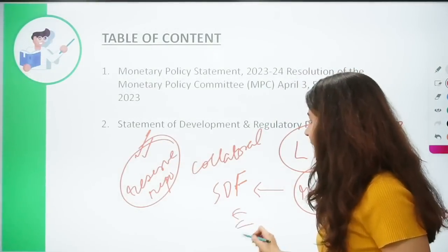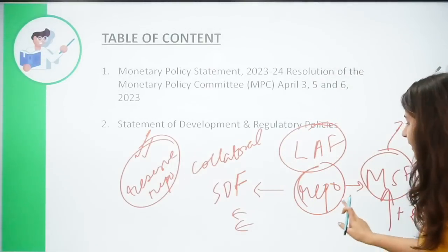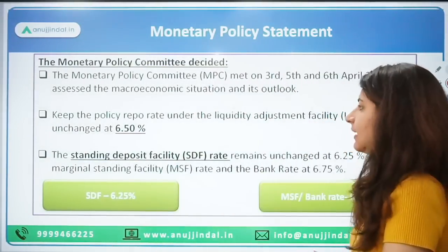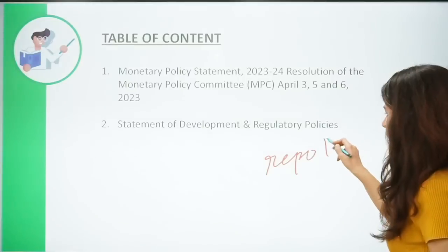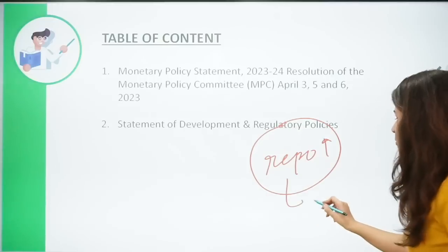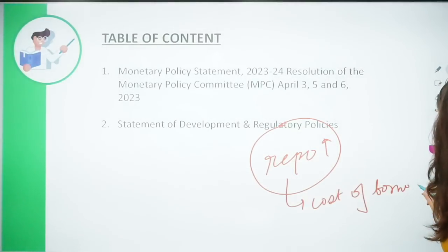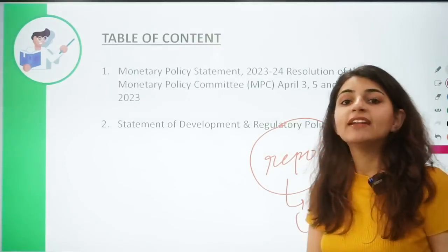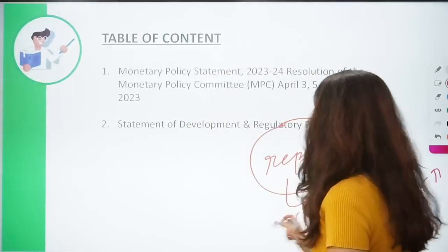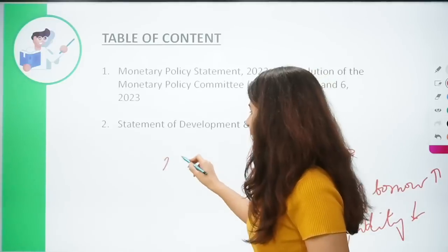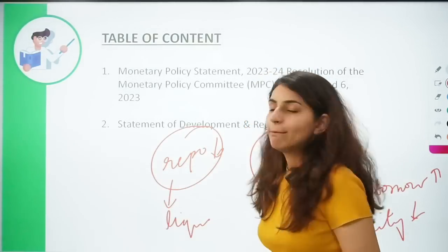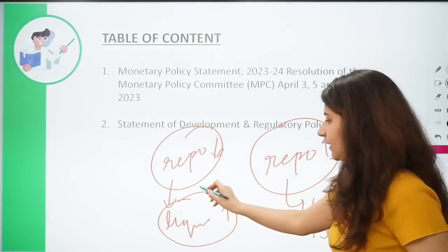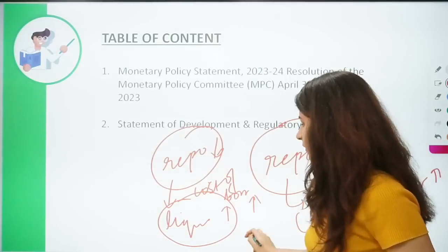In repo, it is a repurchase agreement wherein banks can avail liquidity from RBI by giving collateral — that is, securities. When RBI increases the repo rate, it increases the cost of borrowing, impacting liquidity in the economy. Lending rates increase when the repo rate is high, making it harder for households and businesses to borrow. When the repo rate is less, the cost of borrowing decreases, leading to more credit and more growth.